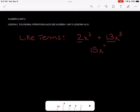But if I had, let's say, 2x squared plus 13x cubed, I cannot do anything else here. This is completely simplified because these are not the same, they're not like terms. So we couldn't go any further there.